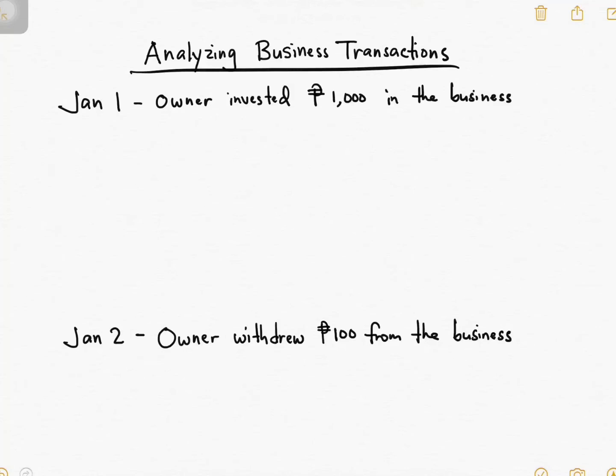Hello, so this is part 3 of my how-to journalize series, and here we are going to analyze business transactions starting with the first one right here. So on January 1, the owner invested 1,000 pesos in the business, and what you want to do is set up your accounting equation first.